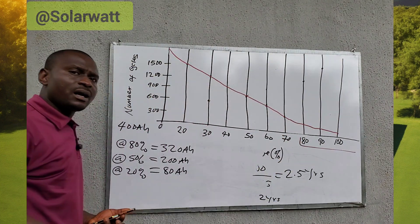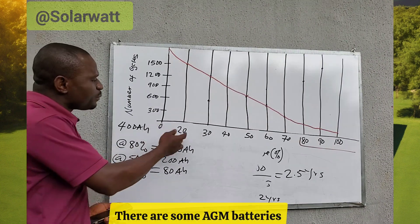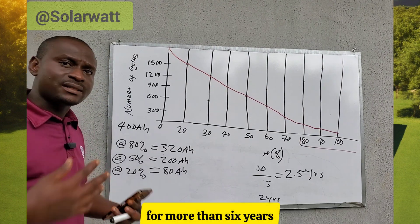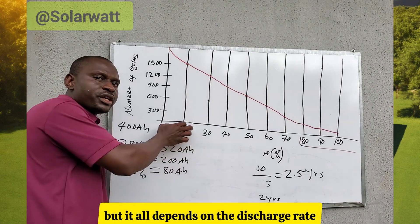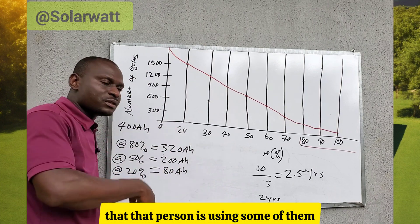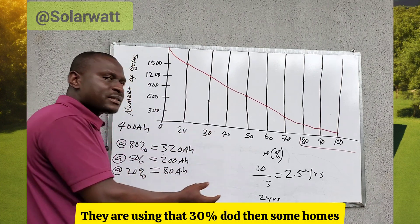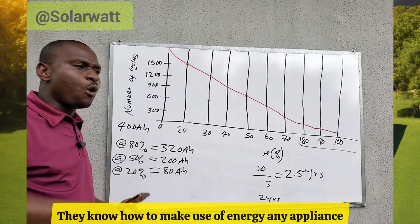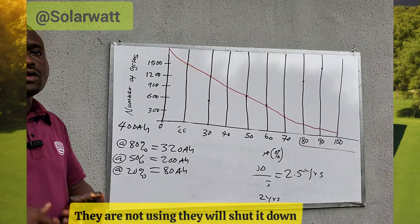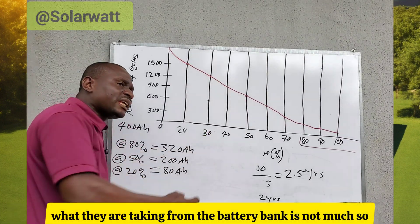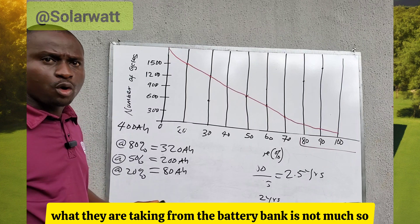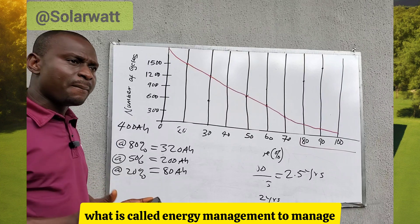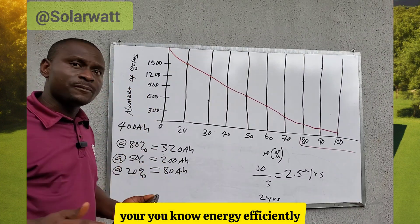For lithium batteries, even at 80% DoD the battery will last longer. Some AGM and gel battery users have had their batteries last more than five or six years by using only 30% DoD. Homes that are energy efficient — turning off unused appliances — draw less from the battery bank, so their batteries last longer. You also need to practice energy management to use your energy efficiently.